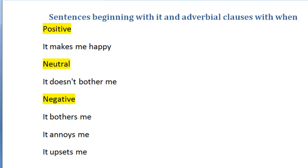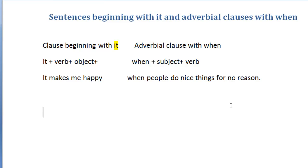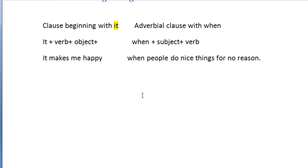Let me present the structure. We have clauses beginning with 'it.' First, we have the pronoun 'it,' followed by a verb, then an object — in this case 'me' — and some sort of complement. For example: 'It makes me happy.' Then it's followed by an adverbial clause with 'when': when + subject + verb. So: 'when people do nice things for no reason.'